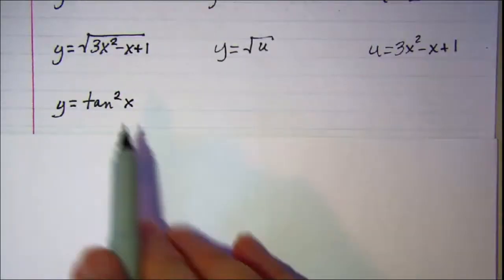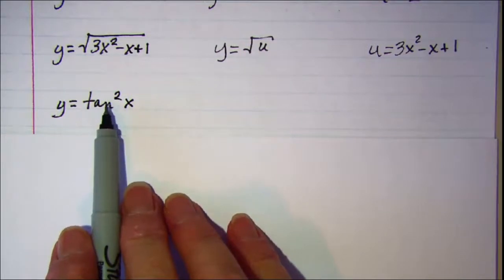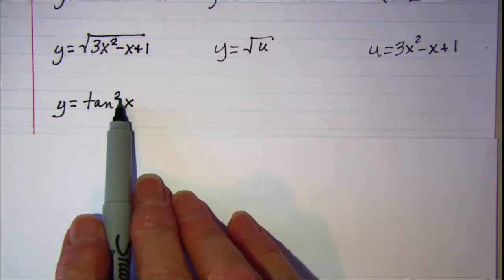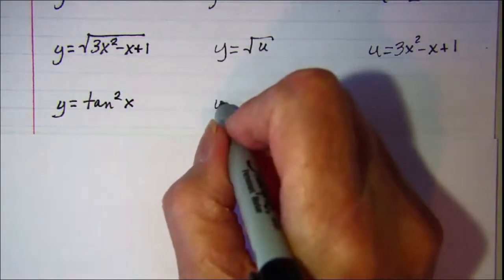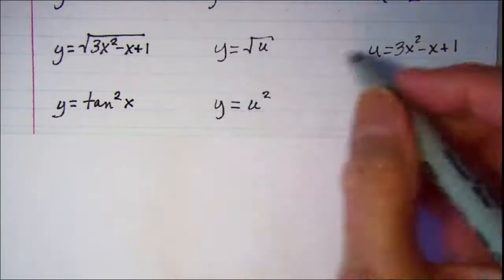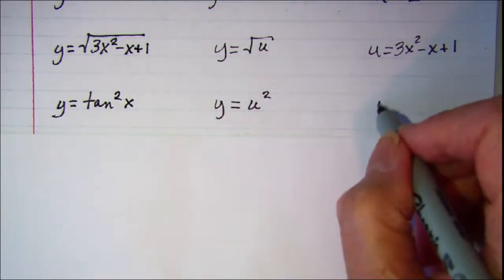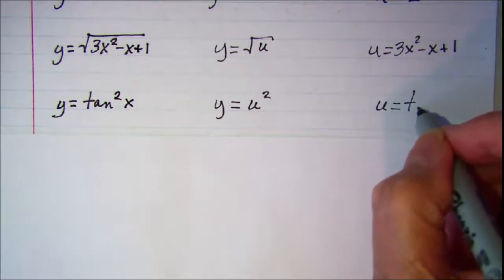On this one we have something squared, so y is u squared, and then u is tangent x.